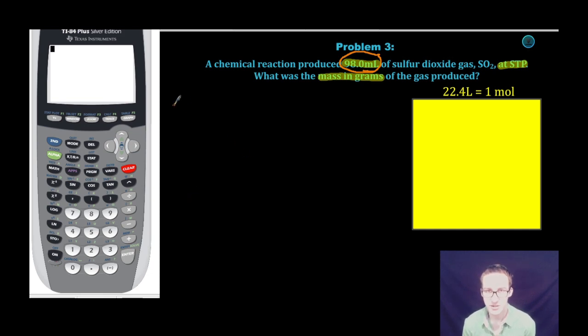To do that, I set up a conversion factor like I normally would: 98.0 milliliters times, with milliliters on the bottom and liters on top. The relationship between liters and milliliters is one liter for every 1000 milliliters.